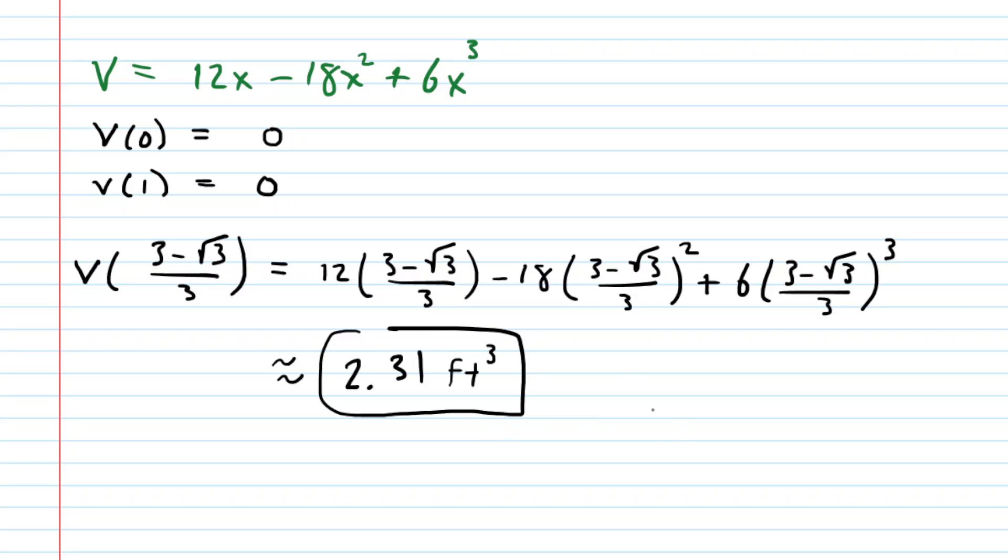A little more about why this maximizes the volume. Again, just consider maybe from a graphical point of view you have volume as a function of x. Well we plugged in 0 for x and got a volume of 0. We plugged in 1 for x and got a volume of 0. But then between 0 and 1 we had found this very special value of x. It was that 3 minus root 3 over 3. And at that point, at that x value, the slope of the tangent line was equal to 0. And so we would indeed have a maximum at that point when x is equal to 3 minus root 3 all over 3. And that maximum volume is approximately 2.31 feet cubed.